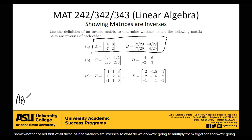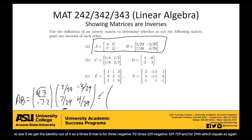So A times B, that is 4, 3, negative 7, 2, times 2 29ths, negative 3 29ths, 7 29ths, and 4 29ths. So again, you do rows by columns. Rows by columns.